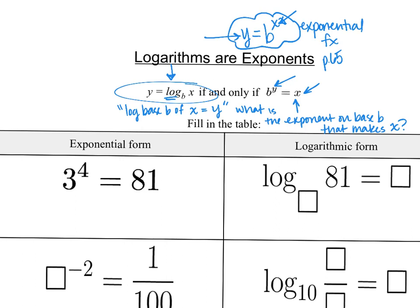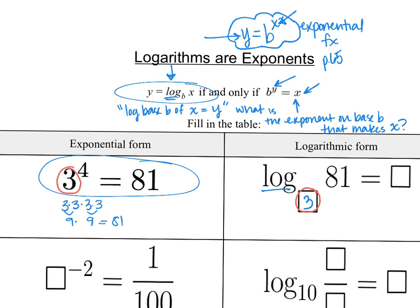Looking at the first problem — exponential form — we already know 3 to the 4th is 81, since 3 times 3 times 3 times 3 gives us 9 and 9, so that's 81. In log form, we have the same base. The 81 was the answer to our exponential expression, and the answer to a log is the exponent that makes that happen, which is 4. So log base 3 of 81 equals 4.